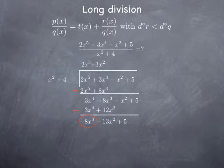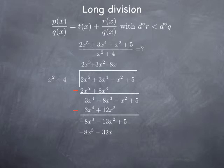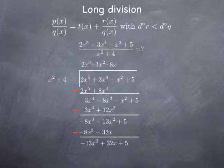We divide negative 8x cubed by x squared to get negative 8x, multiply by x squared plus 4 to get negative 8x cubed minus 32x, and subtract from the previous expression. The x cubed terms cancel, negative 13x squared remains, 0x minus negative 32x gives positive 32x, and 5 remains. We check degrees once more — still not less than the divisor — so we iterate again.